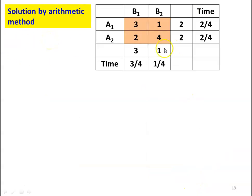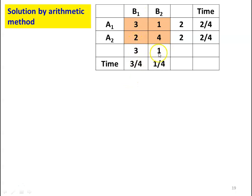Now we solve by arithmetic method. The matrix is A1: 3, 1; A2: 2, 4. Find the differences: first row difference is |3−1| = 2, written in the second row; second row difference is |2−4| = 2, written in the first row. For columns: column B1 difference is |3−2| = 1, written in second column; column B2 difference is |1−4| = 3, written in first column. The total is 4 for both rows and columns — they are equal, so we can proceed with the arithmetic method.